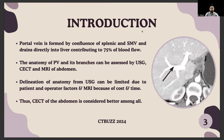The portal vein is formed by the confluence of the splenic vein and SMV and drains directly into the liver, contributing about 75% of the hepatic blood flow. The anatomy of the portal vein and its branches can be assessed on USG, CCT, and MRI of the abdomen. The delineation of anatomy from USG can be limited due to patient and operator factors, and MRI because of cost and time. Thus, CCT was chosen as the modality of choice.